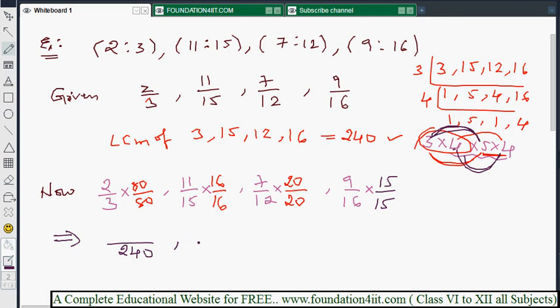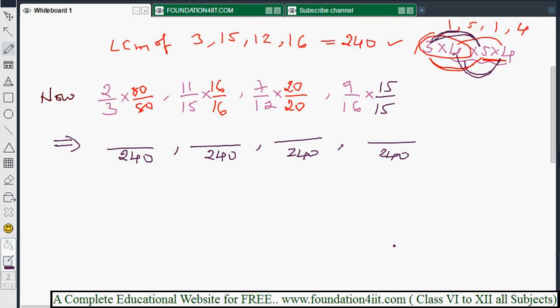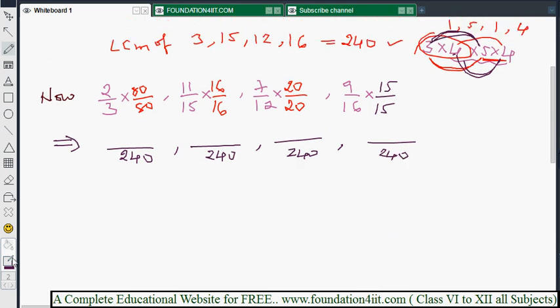Because 3 into 80 is 240. Again, 15 into 16 also 240. And 16 and 15 also 240. Only thing is we need to multiply numerators properly. That is 2 into 80, numerators you can multiply: 160. 11 into 16: 176. And 7 into 20: 140. And 15 nines, that is 135.